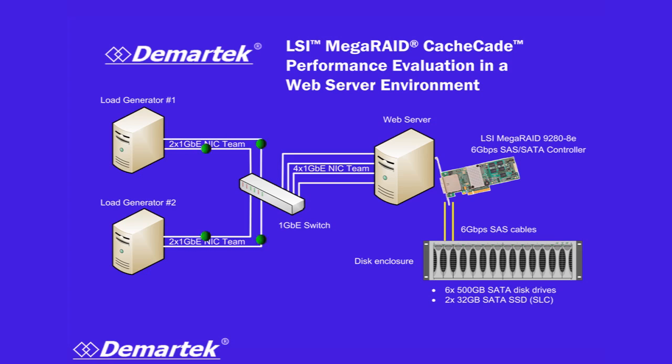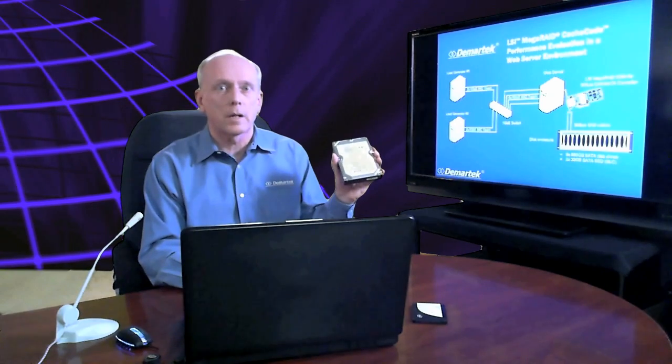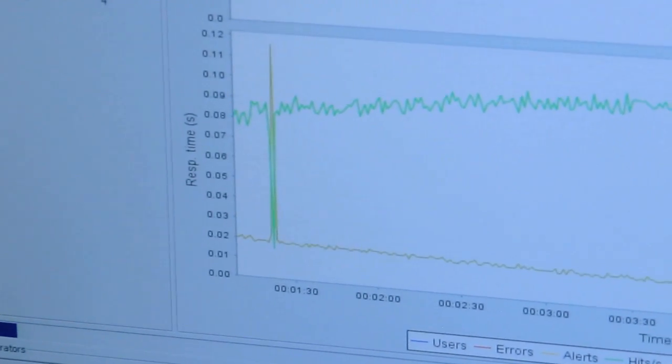We configured a relatively simple web server design containing the equivalent of many websites hosted on a single web server. You can see here we have two systems on the left placing the load on the web server across the network. The web server then responded with the web pages as they were requested. Inside the web server, we have the MegaRate controller talking to an enclosure of disk drives. We had two types of disk drives in that enclosure. The first type is a 7200 RPM SATA disk drive — we had six of these set up in a RAID 10 configuration. We created two volumes: one for the operating system, and one for the web content itself. We ran that test and measured the results. Then we added an SSD into the mix to set this up with Cascade, which used it as a cache for accelerating performance. We ran the test with that and measured the results.